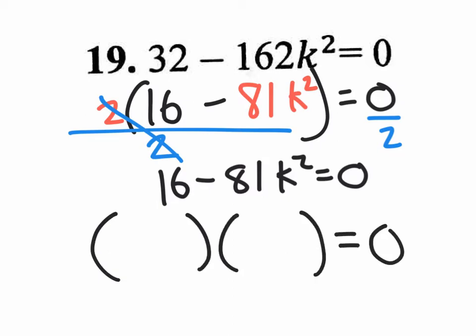When I do the square root of 16, that's 4. When I do the square root of 81K squared, that will be 9K. So you put 9K here and 9K over here. One has to be a plus, one has to be a minus — that's the only way the middle term actually cancels out.